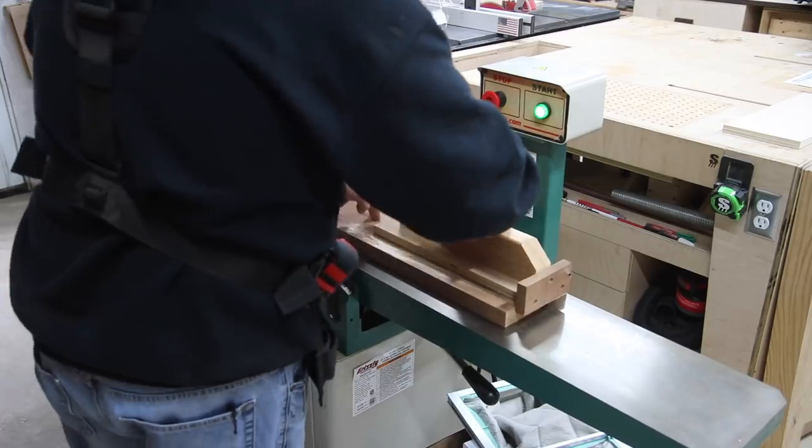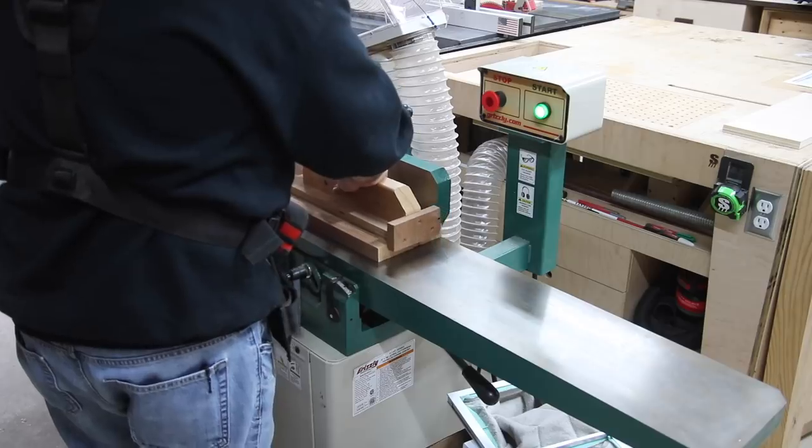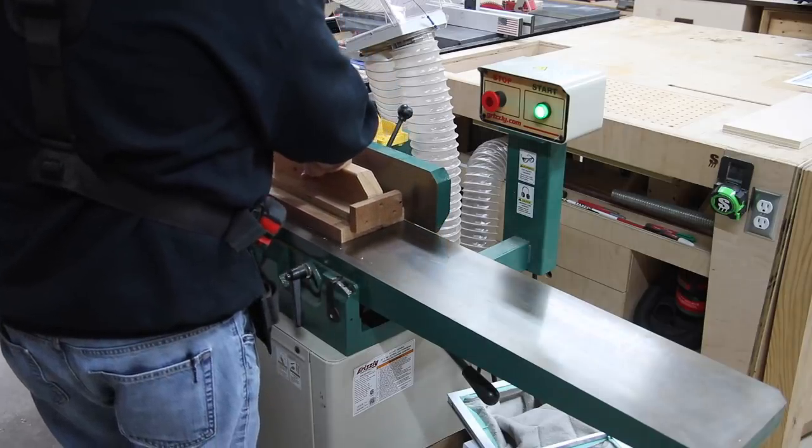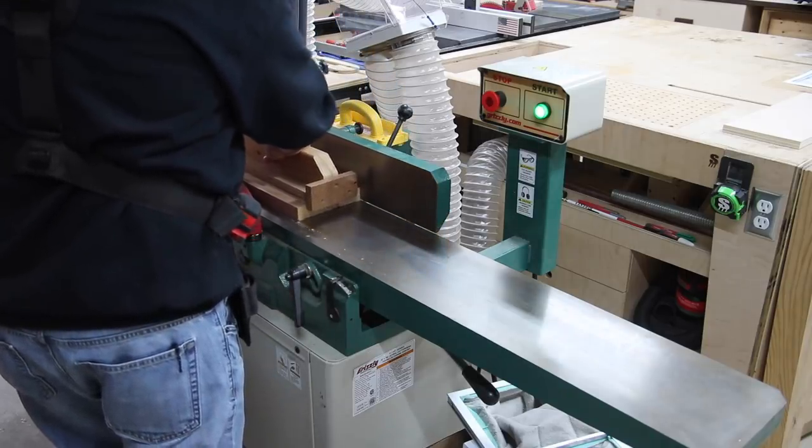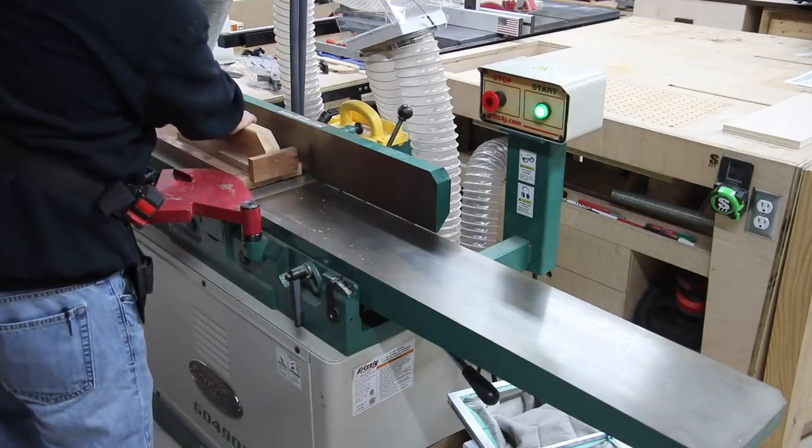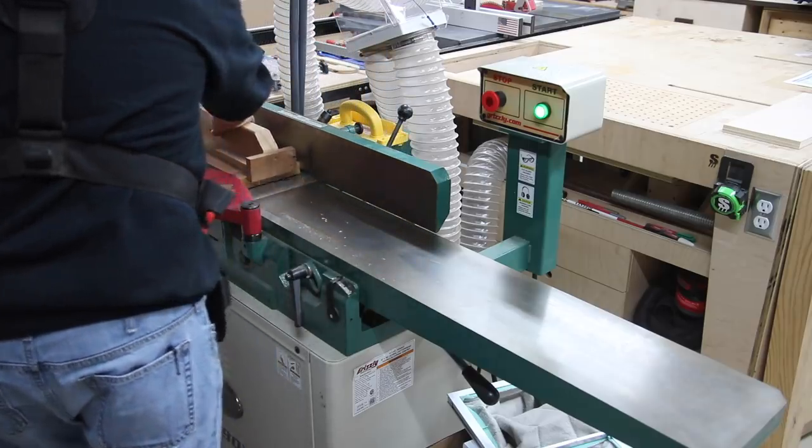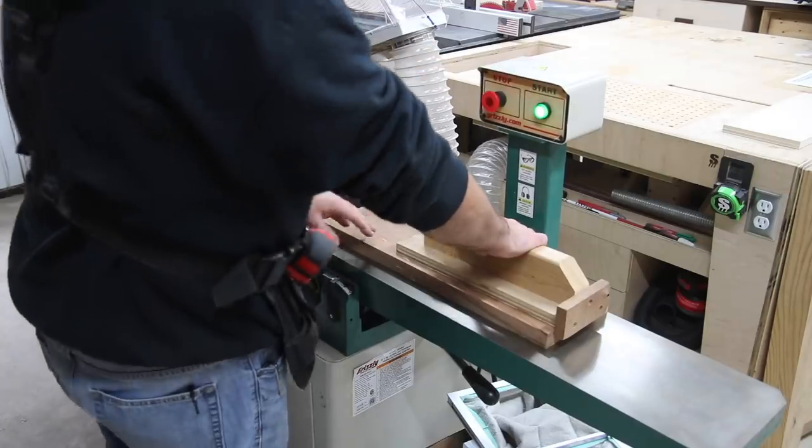Now here at the jointer, I've got the dust collector turned off so you can kind of see the difference here. I'm going to make two passes here at the jointer, and you're going to see all this dust on the table. This is a helical head jointer, 240 unit, and it's got some power to it. So it's just going to blow the dust back onto the bed of the jointer.